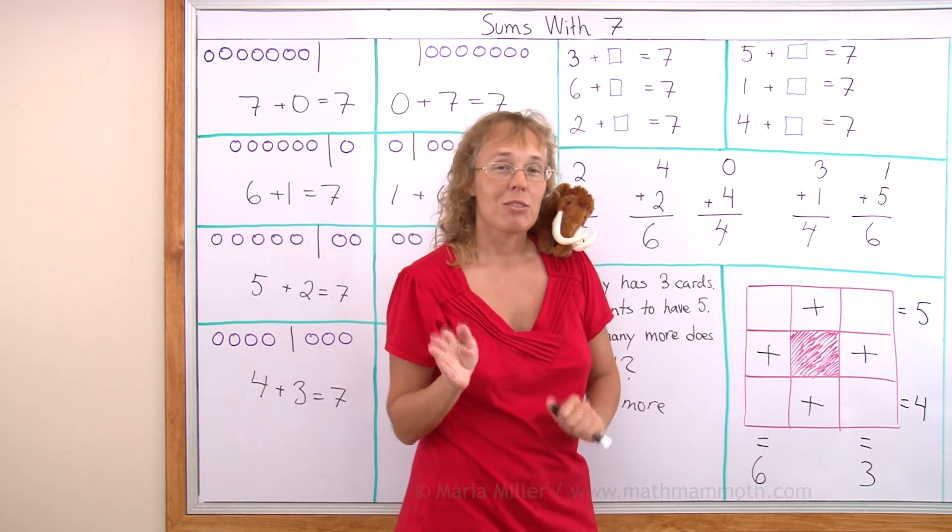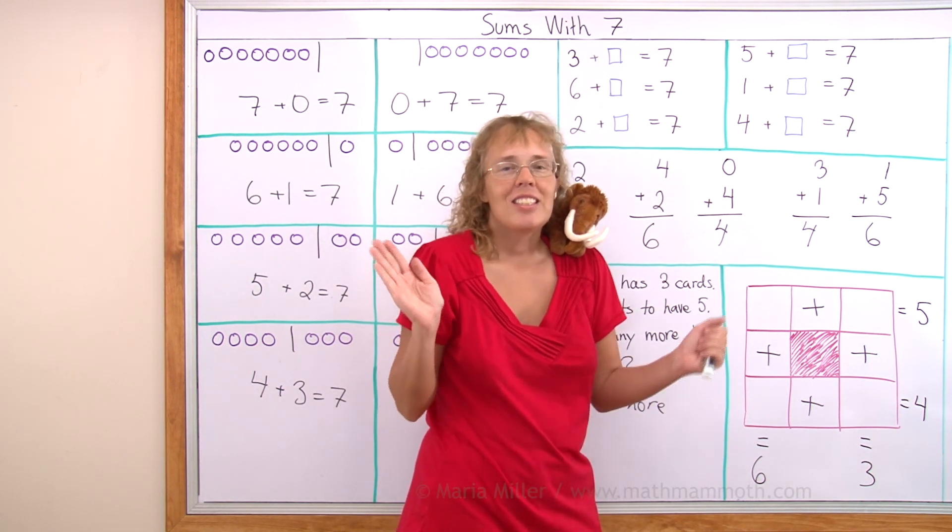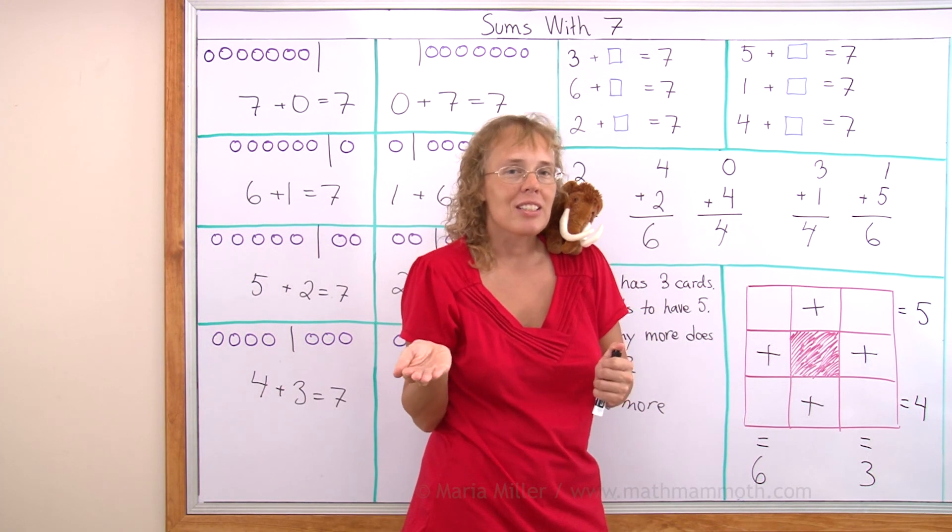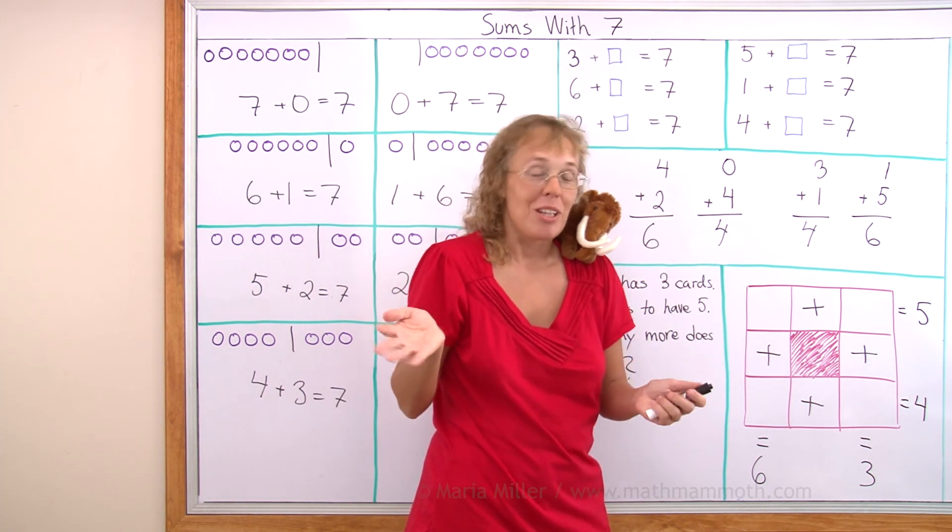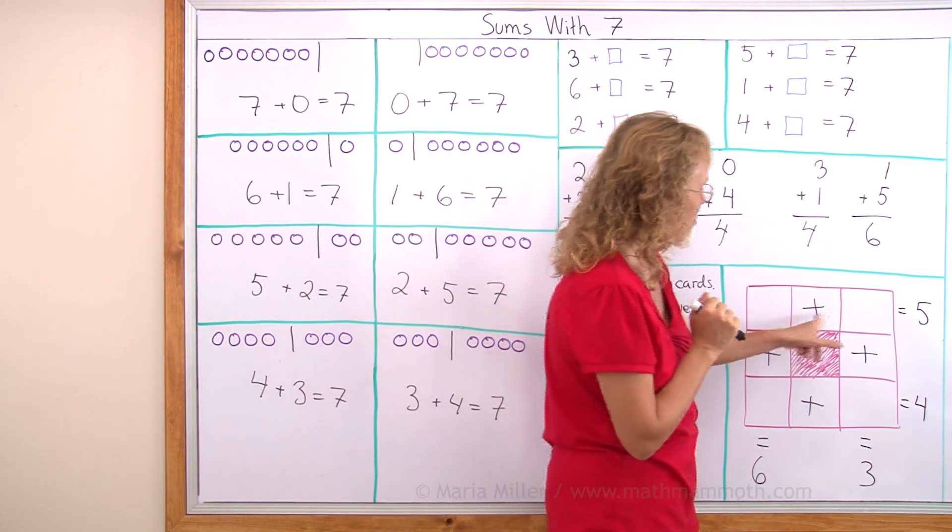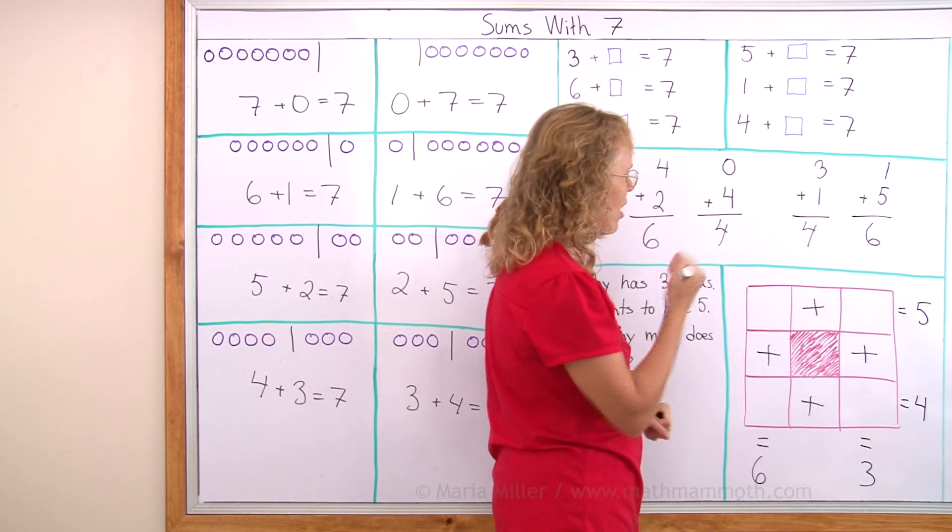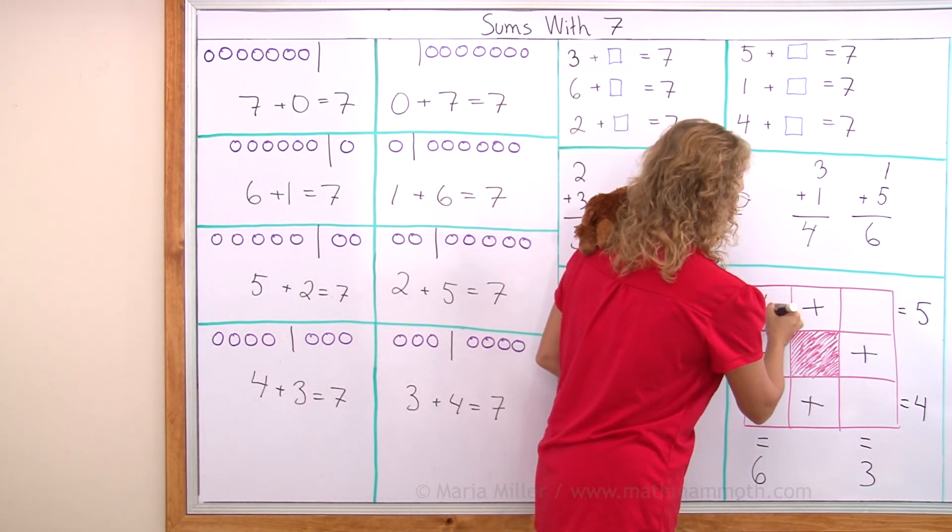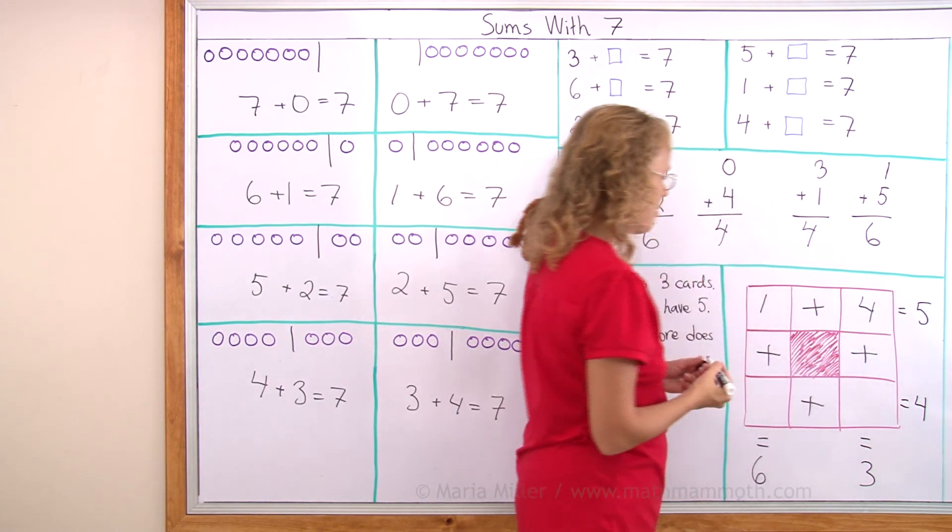Now don't worry if you get it wrong at first. Then that just means that you found a way that doesn't work. So you try some other way. For example, let's say I try some number plus some number makes five. I'll try one and four. One plus four makes five.